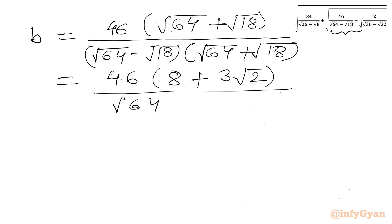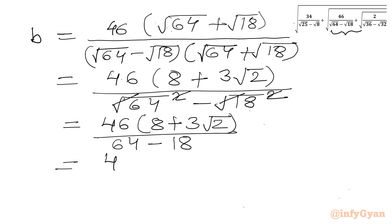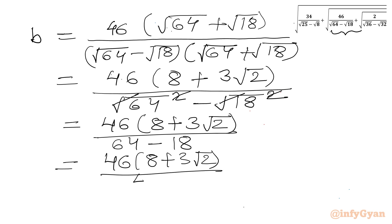The denominator becomes √64 squared minus √18 squared, and after cancelling square with square root, it becomes 46 times (8 plus 3√2) over (64 minus 18), which is 46. So 46 and 46 cancel, giving B equal to 8 plus 3√2.